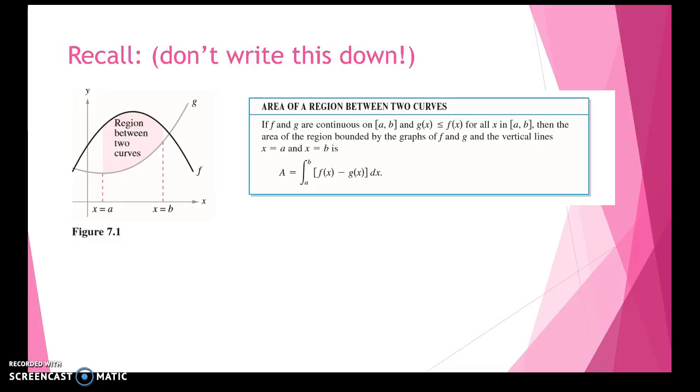The functions must be continuous and when we find the area we take the top function, the function with the greater y values, and subtract the function that has the smaller y values. Now a and b can either be vertical lines that are defined or we had to find the points of intersection. So the boundaries came from where the two functions were equal to each other. So that's what this video is going to work on, finding those points of intersection.